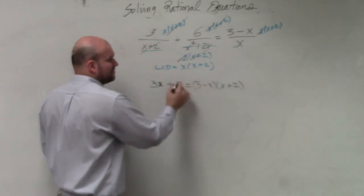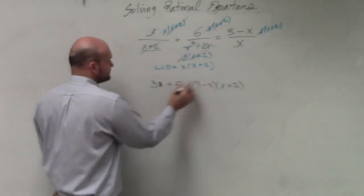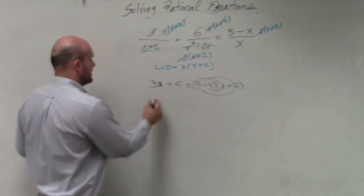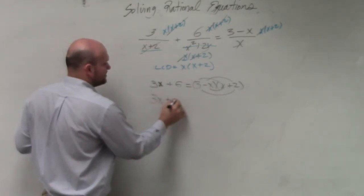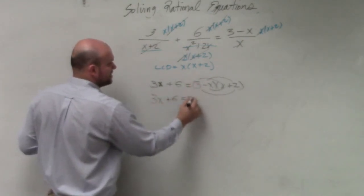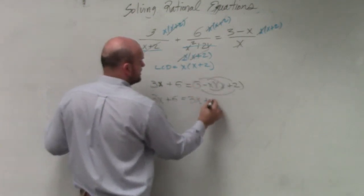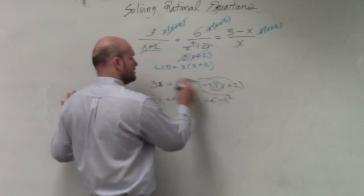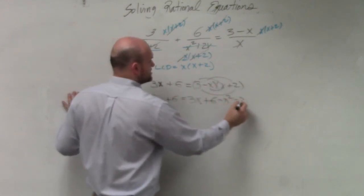So I need to apply a distorted property here, or FOIL, to multiply this out. So I have 3x plus 6 equals, let's see, this becomes 3x plus 6 minus x squared, and let's see, minus 2x.